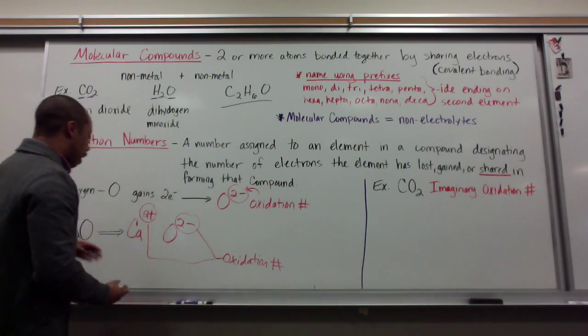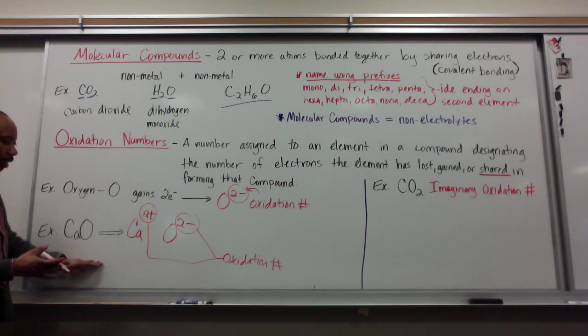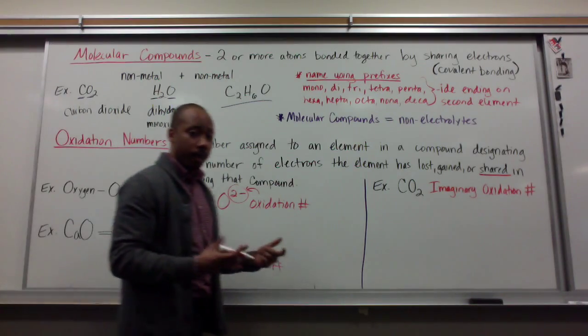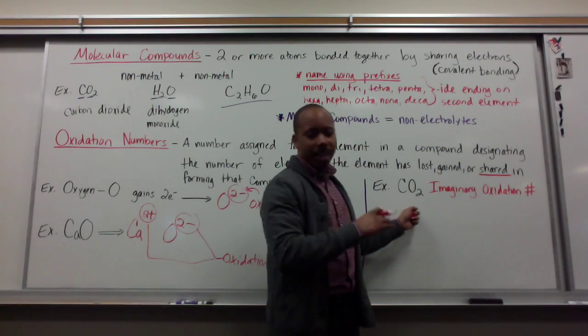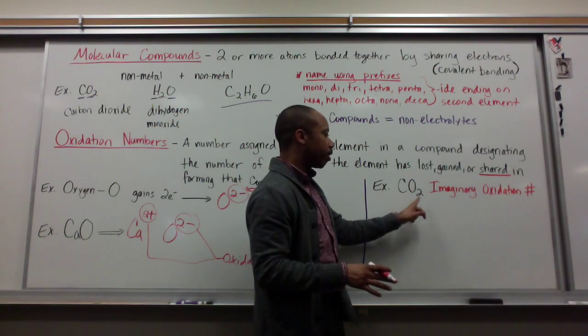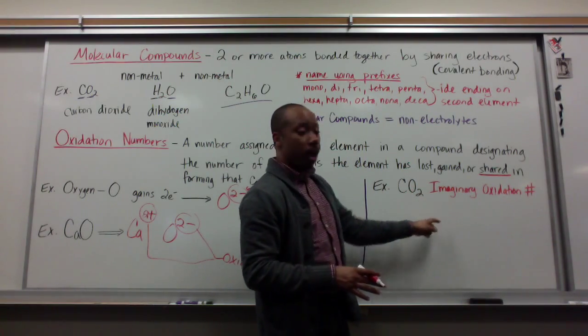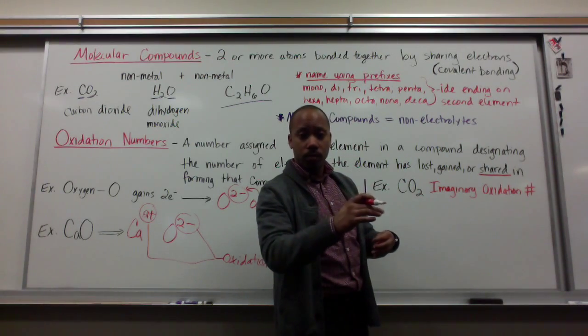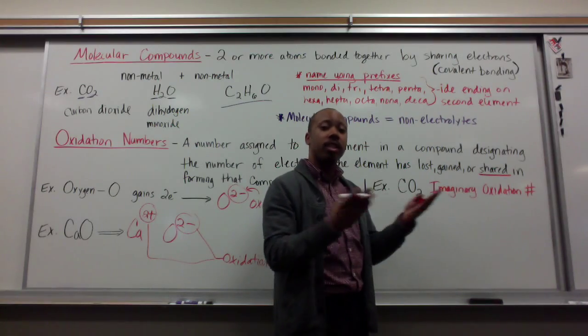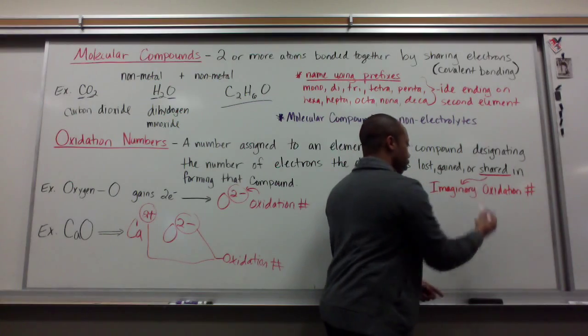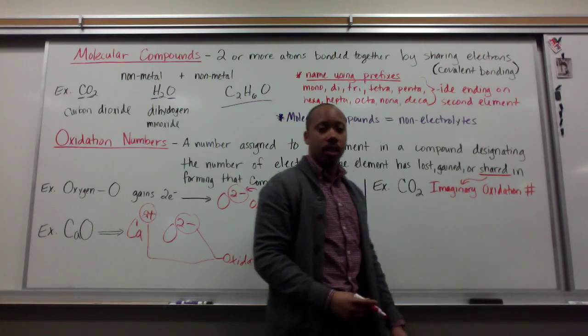Now, this is an ionic compound. Let's see what it looks like in a molecular compound. Carbon dioxide is a molecular compound. And we call its oxidation numbers imaginary, because it didn't really lose electrons or gain electrons. It's sharing. That's why sharing here is underlined. Sharing kind of alludes to imaginary oxidation numbers.